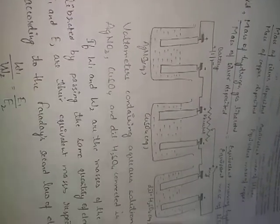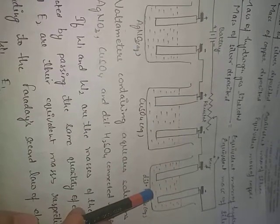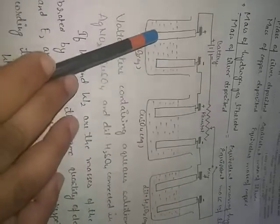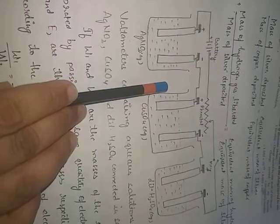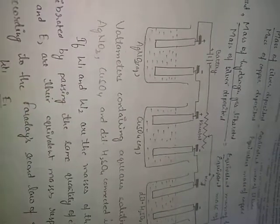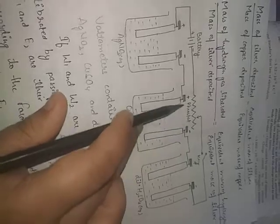Consider solutions of AgNO₃, CuSO₄, and dilute sulfuric acid all connected in series. Two electrodes are placed in each solution — the negative electrode connected to the negative terminal of the battery and the positive to the positive terminal. When all these are connected in series, we can compare the masses deposited.